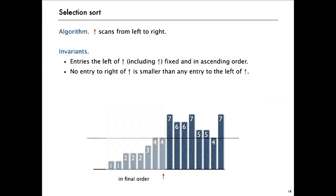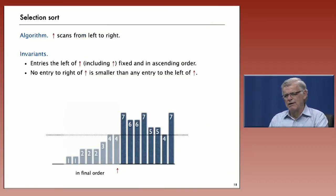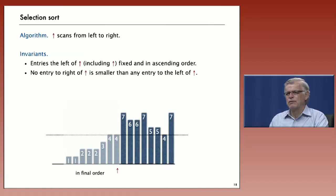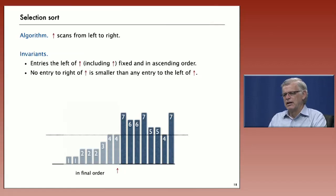One way to understand how an algorithm works is to think about invariants. For selection sort, we have a pointer — our variable i — that scans from left to right, indicated by a red arrow in this representation. The invariants are that the entries on and to the left of the arrow are never changed and they're in ascending order. No entry to the right of the arrow is smaller than any entry to the left of it. That's the way we set it up, and the algorithm maintains those invariants by finding the smallest entry to the right and exchanging it with the next one.